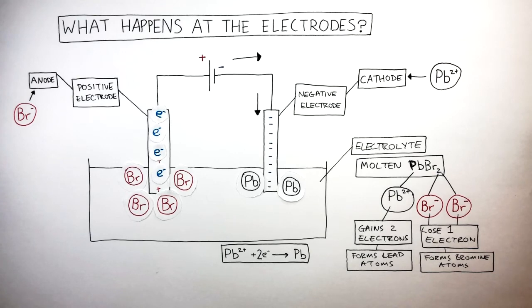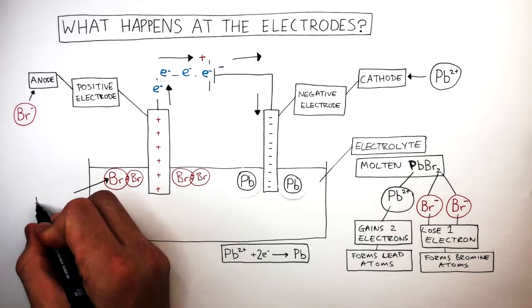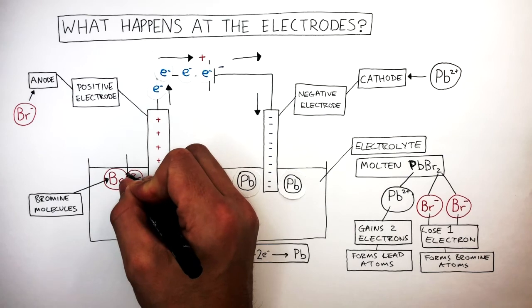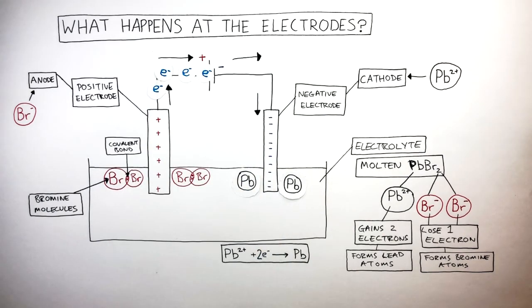These electrons lost by the bromide anions then flow towards the positive terminal of the cell or power pack. The bromine atoms which are formed around the anode are not stable as individual atoms as they only have seven electrons in the outer shell. Therefore they form bromine molecules where there is a covalent bond between the two bromine atoms. It is now stable as a bromine molecule Br2.